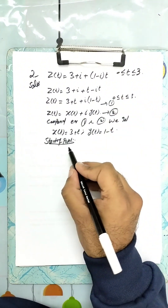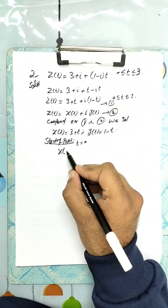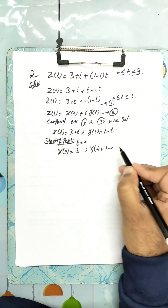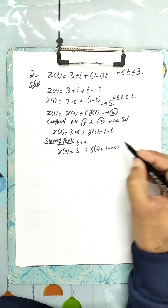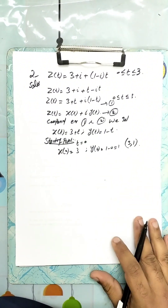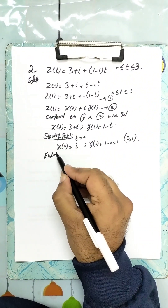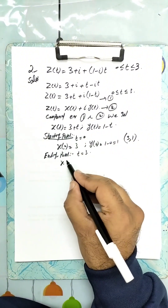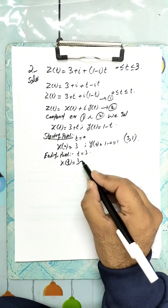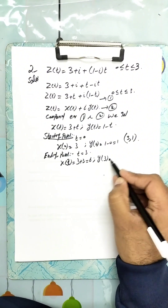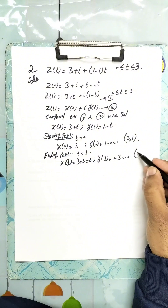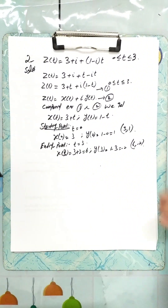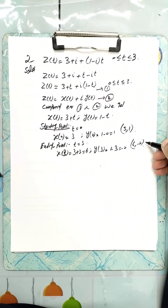The starting point at t equals 0 gives x of 0 equals 3 and y of 0 equals 1, so the starting point is (3, 1). The ending point at t equals 3 gives x of 3 equals 6 and y of 3 equals 1 − 3 equals −2, so the ending point is (6, −2).